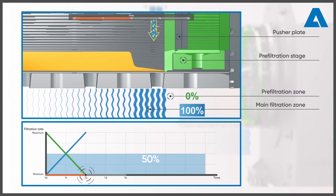At the same time, more and more of the main filtration zone is now accessible and its share of the overall filtration increases accordingly. As soon as the pre-filtration stage reaches its far right position, the process reverses.